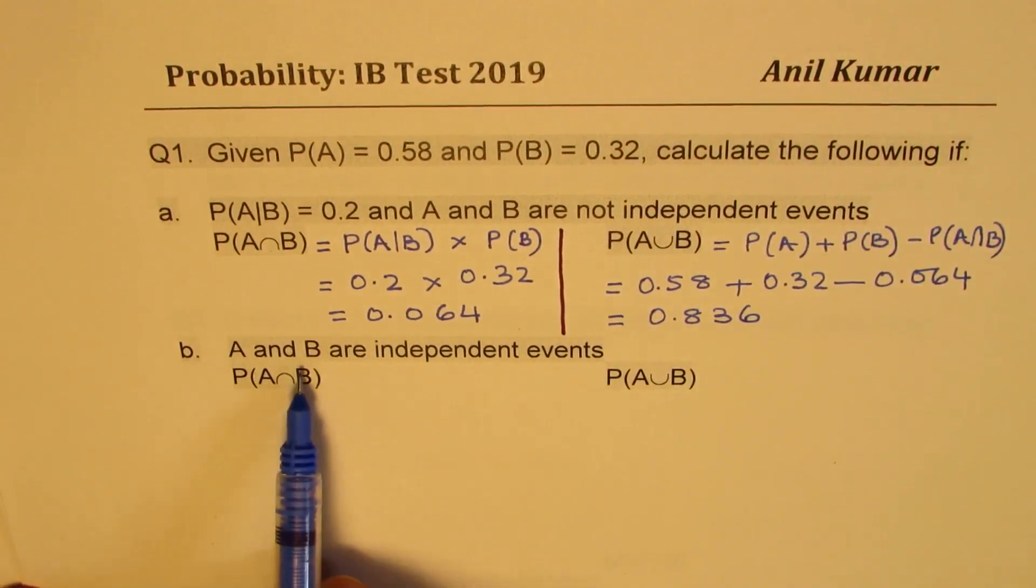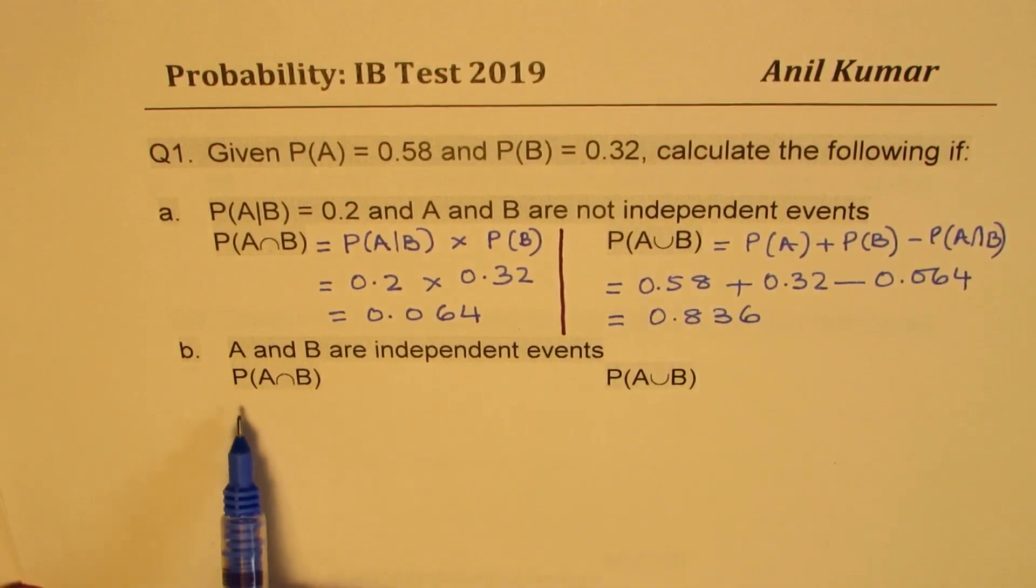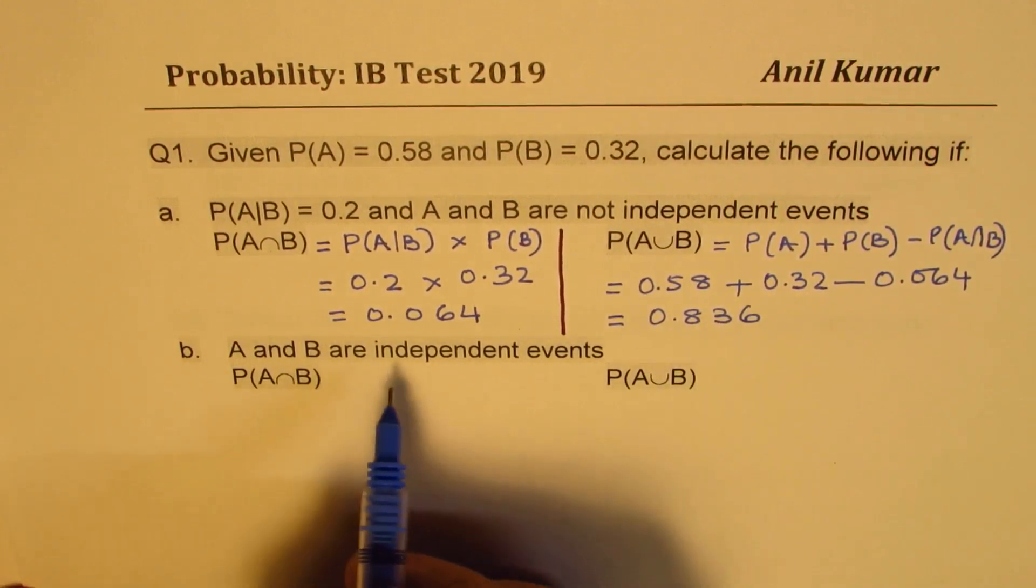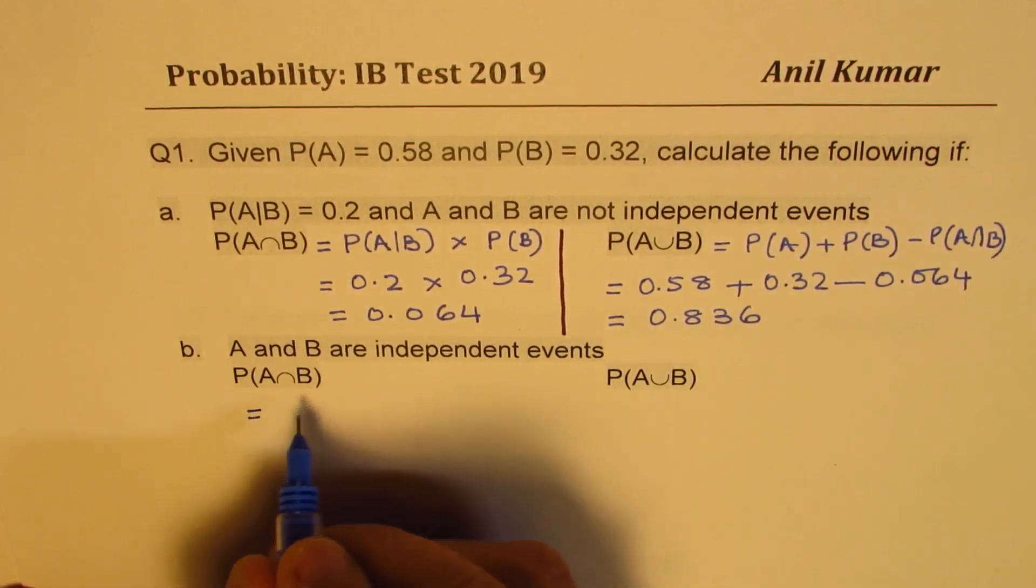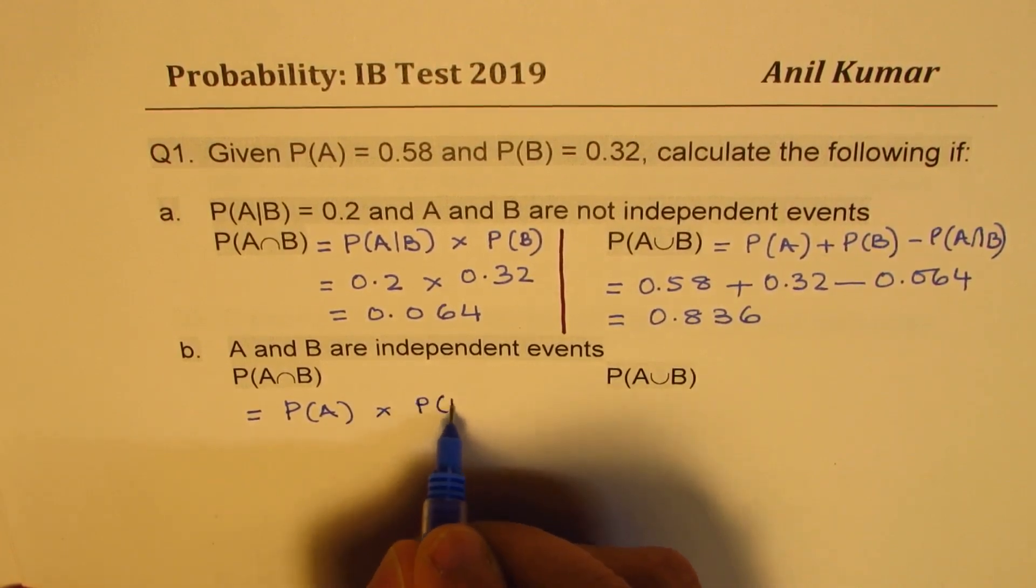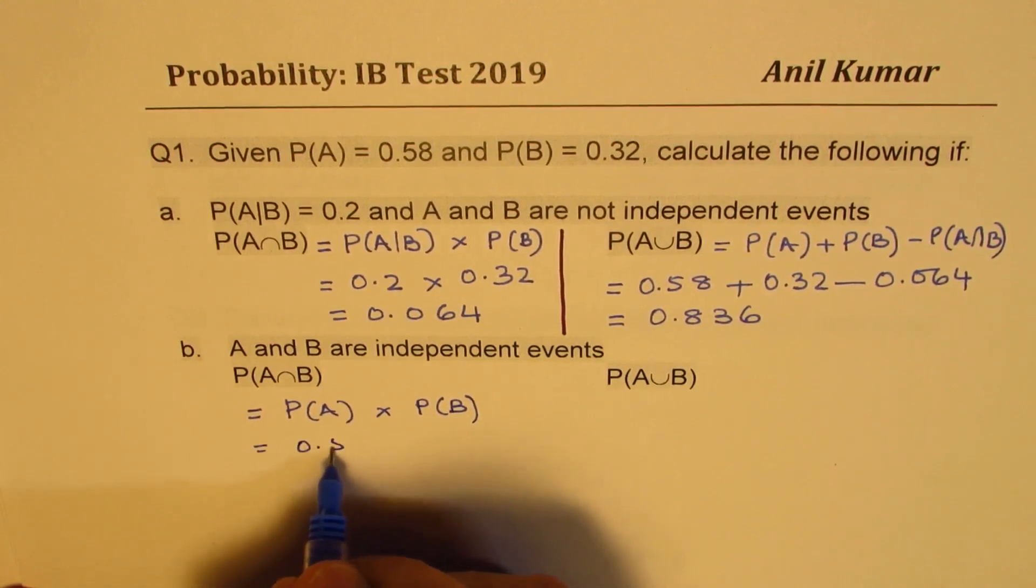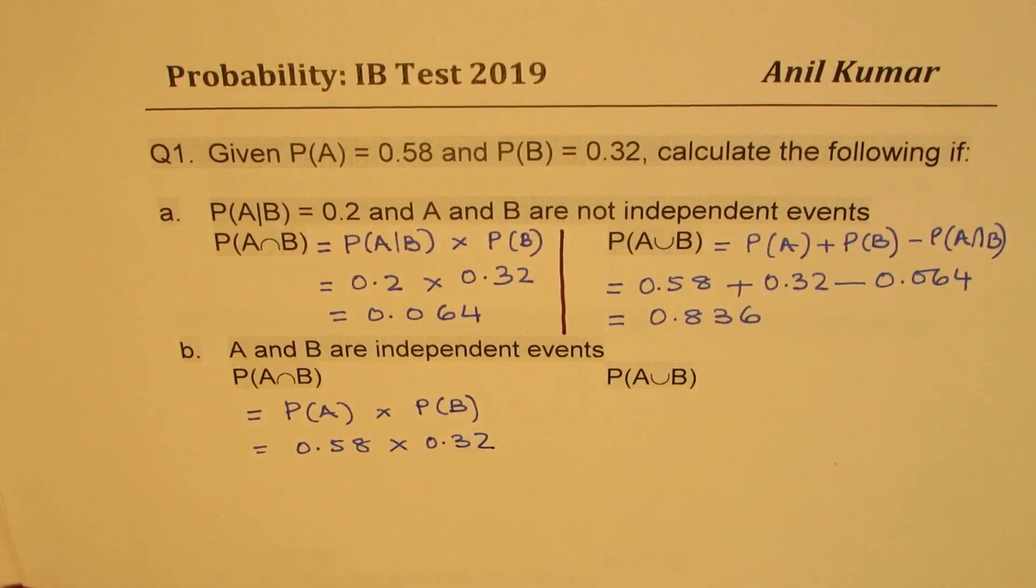Part B: A and B are independent events. In that case, we need to find A intersection B probability and probability of A or B. Now in this particular case, when they are independent events, then this probability is equal to probability of A times probability of B. Probability of A is 0.58 multiplied by 0.32 to get your answer.